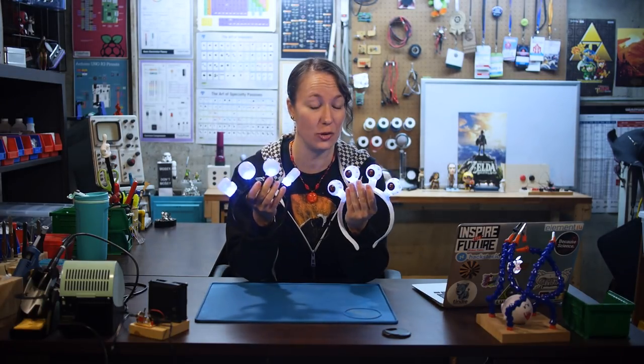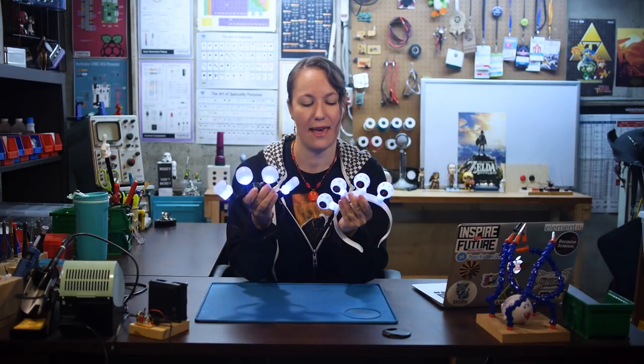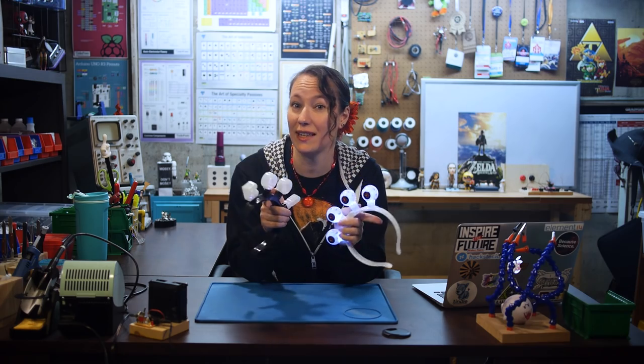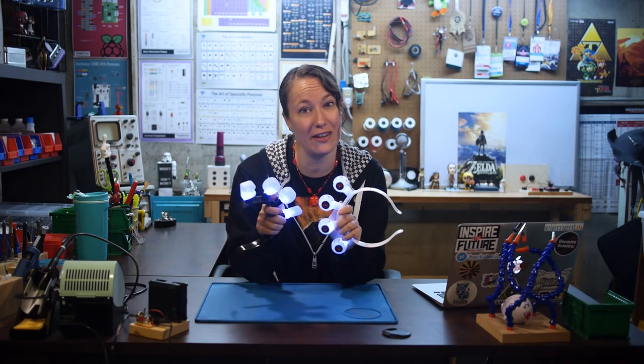And I found these light up headbands. Now they have three settings: fast strobe, slow strobe, and full on. I like the idea of these, but the strobing is faster than I want. So today I'm going to show you how to make your own flashing LED circuit using a 555 timer.